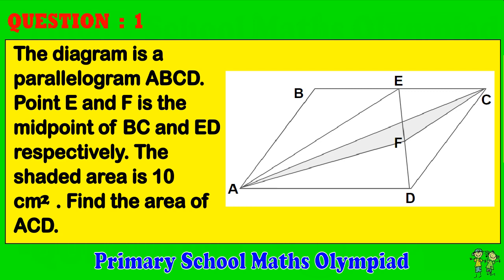Question 1. The diagram is a parallelogram ABCD. Points E and F are the midpoints of BC and ED, respectively. The shaded area is 10 cm². Find the area of triangle ACD.